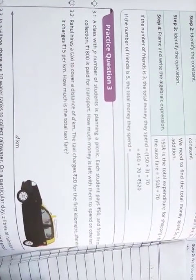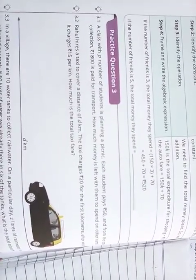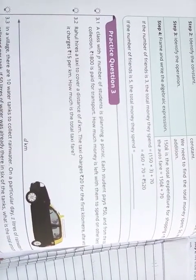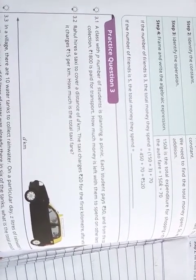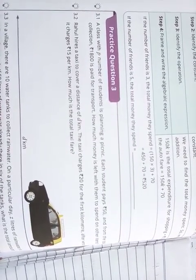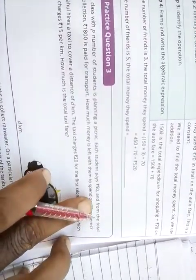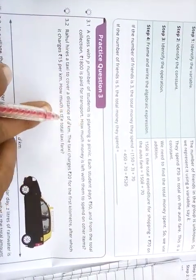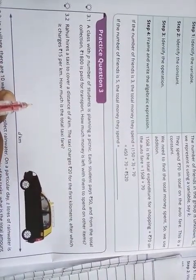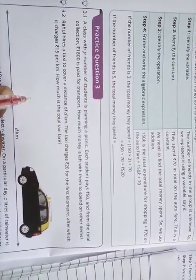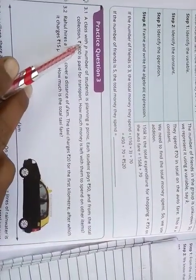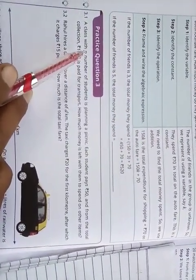Practice question 3 is saying that a class with p number of students is planning a picnic. Each student pays rupees 50, and from the total collection, rupees 1800 is paid for the transport. How much money is left with them to spend on other items? How many students are there? There are p students. So solution 3.1: number of students is equal to p.